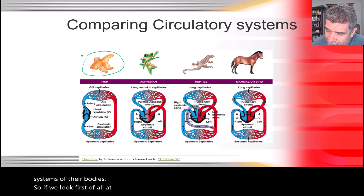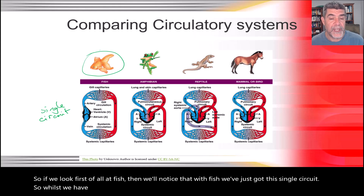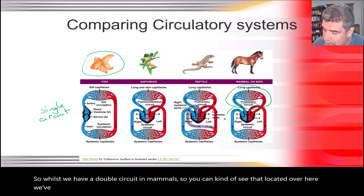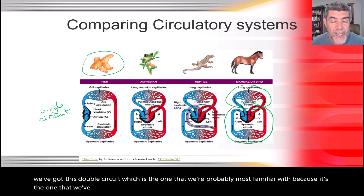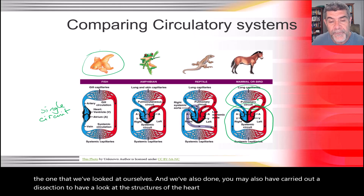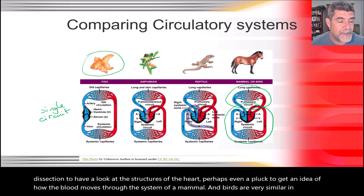If we look first at fish, we notice that fish have just a single circuit. Whereas mammals have a double circuit — the one we're most familiar with. You may have also carried out a dissection to look at the structures of the heart, perhaps even a pluck, to get an idea of how blood moves through the system of a mammal. Birds are very similar. In fish, we've just got this single circuit.